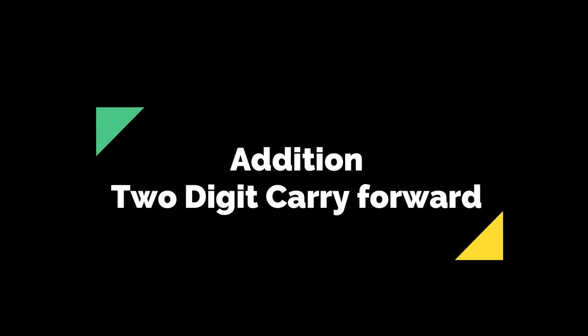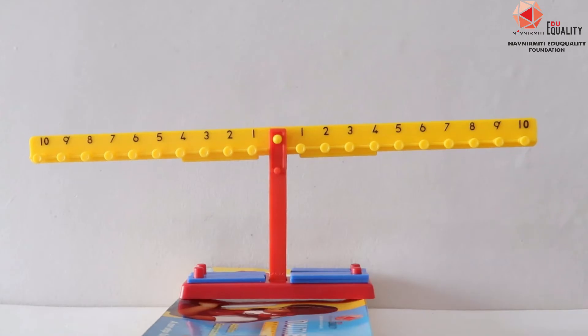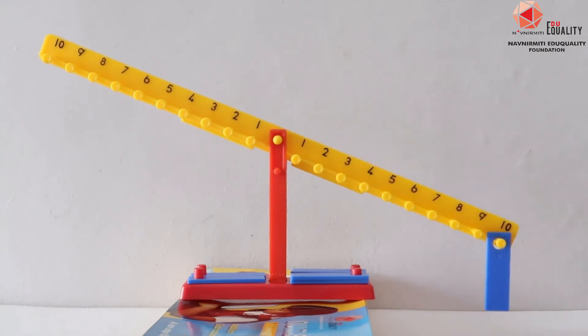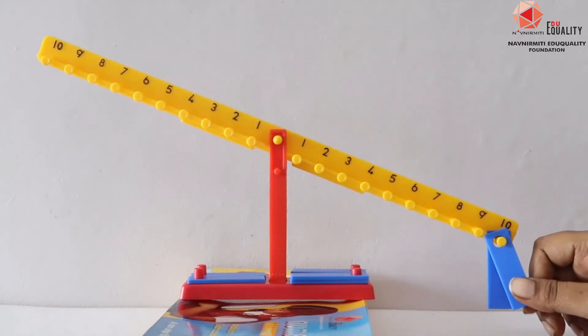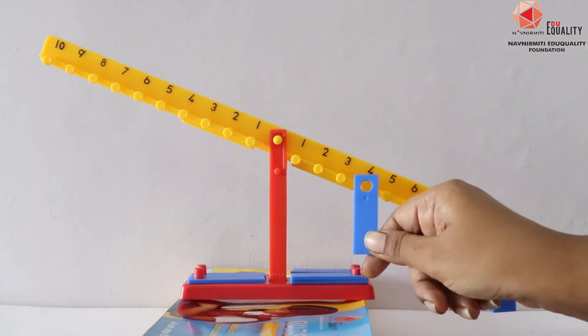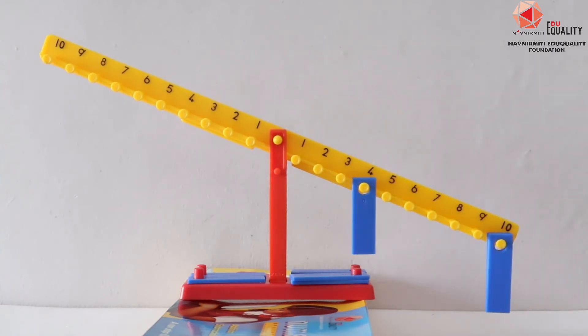Addition with two digit carry forward. So let me make a number here on the number balance. I place one strip on number 10, another strip. This makes 20 and a strip on 4. So my number is 24.